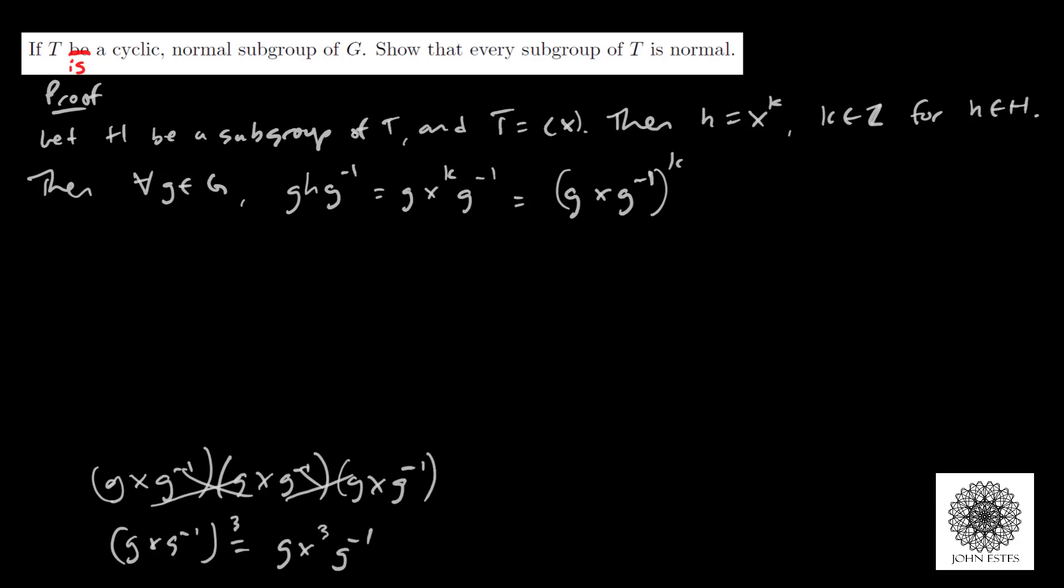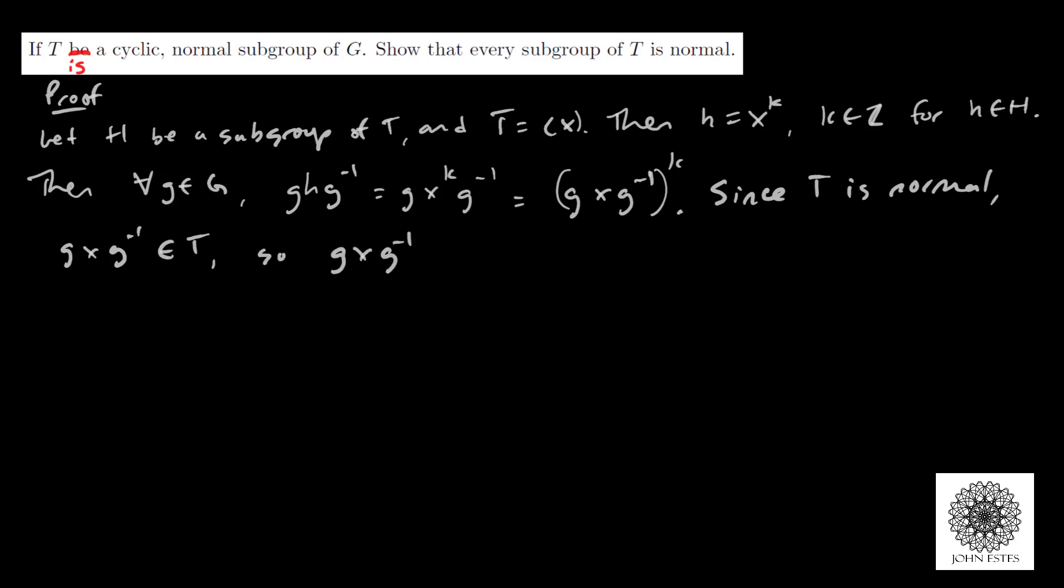Since T is normal, GXG^(-1) is an element of T. That means GXG^(-1) can be written as X^M for some integer M. We know GXG^(-1) is in T because T is normal—that's the definition of normal. And since T is cyclic, GXG^(-1) has to be X to some power because X generates all the elements of T.